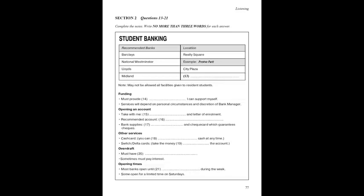Thanks for turning up today to this short talk on student banking. Many of you are unfamiliar with the way banks work in this country, and today's talk should give you a few starting points. I will answer any questions at the end. You'll need to open a bank account while you're here — it's the safest place to keep your money, and it's best to open an account with one of the major banks. You should each have a handout with names and addresses. There's Barclays in Realty Square, National Westminster in Preston Park, Lloyd's in City Plaza, and Midland in Hope Street.